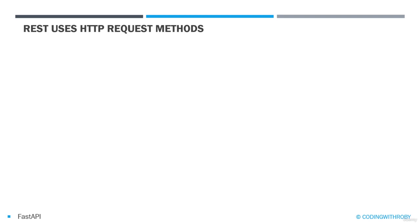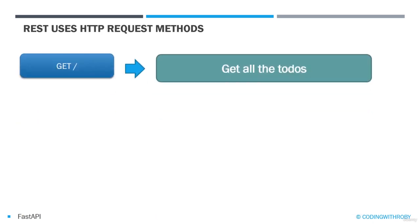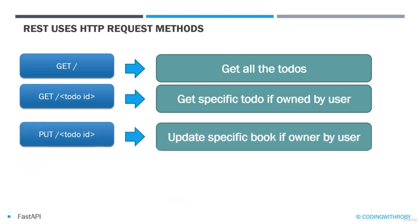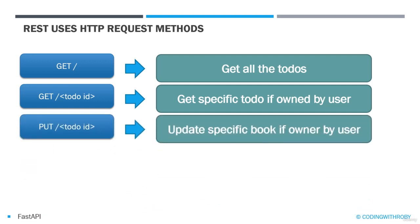Our APIs will include a GET with an empty URL to retrieve all the to-do's, a GET with a to-do ID as a path parameter to get a specific to-do after validation of a user is complete, and a PUT with a to-do ID path parameter and a JSON request body to update a specific to-do after validation of a user is complete.